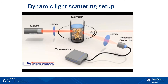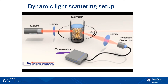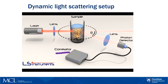Another important part of the system is the correlator. The correlator takes very rapid snapshots of the scattering light on the nanosecond and microsecond scale, one after another. These changes in light intensity with time allow computing a correlation function, which we then analyze to get the diffusion coefficient of the particles.